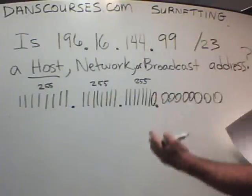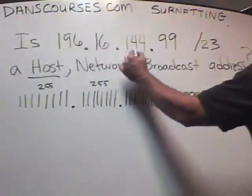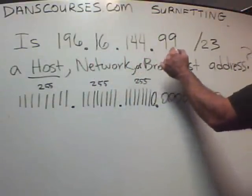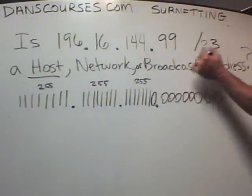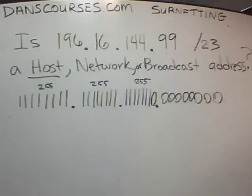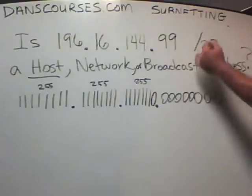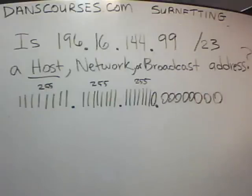If you have an IP address like this — 196.161.44.99 — that's your IP address, but look at this funky subnet mask: slash 23. So once again, we're going to find: is this .99 slash 23 a host, a network, or a broadcast address? We have to be able to find that out.